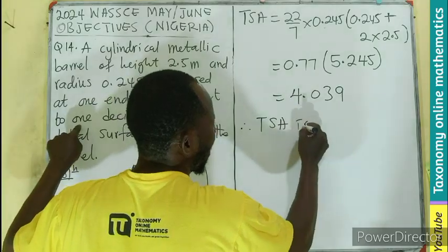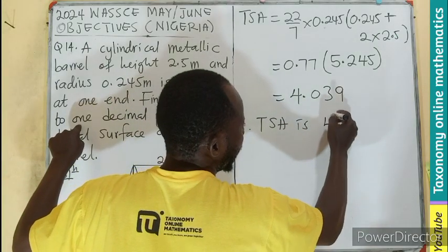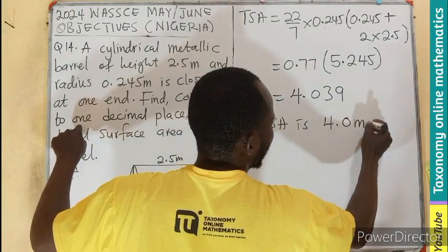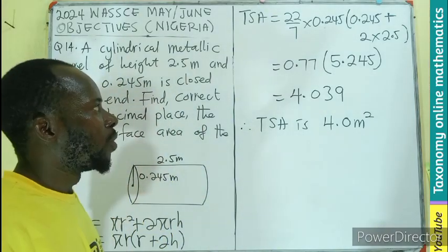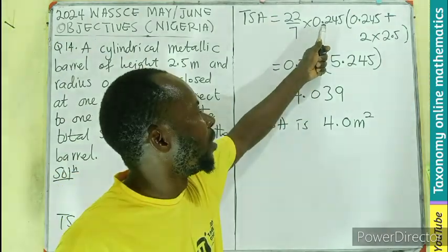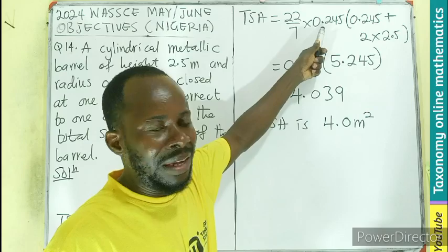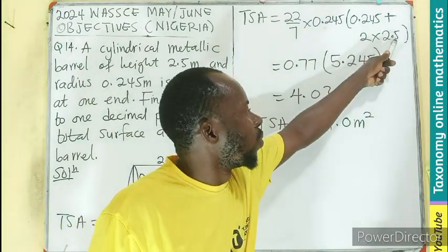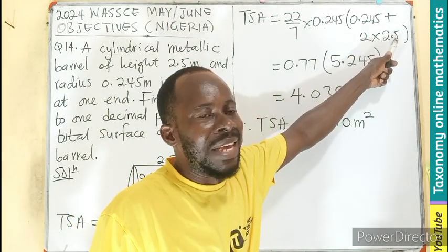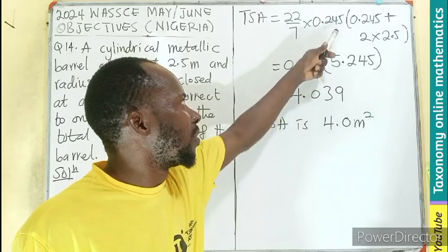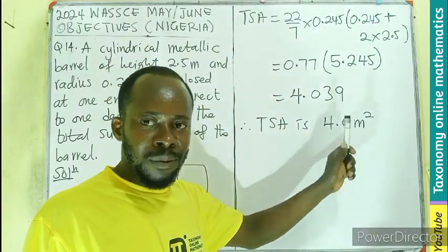Therefore, total surface area is going to be 4.0 meters squared. Why is it squared? Don't forget, this is going to be radius in meters, then this is also going to be height in meters, so this times them will give you meter squared.